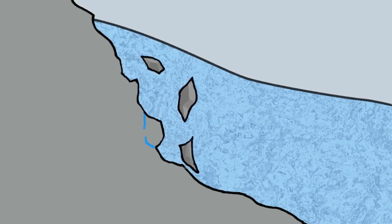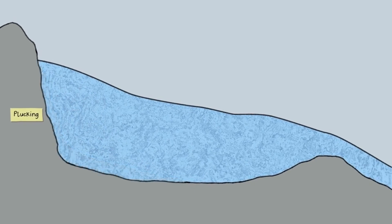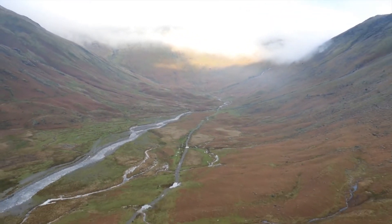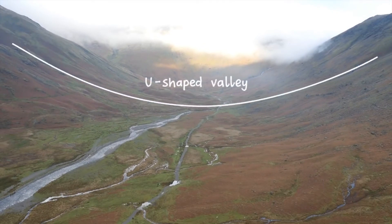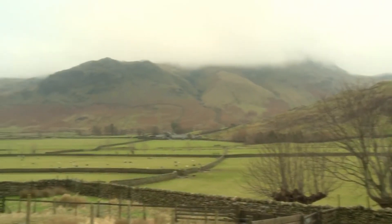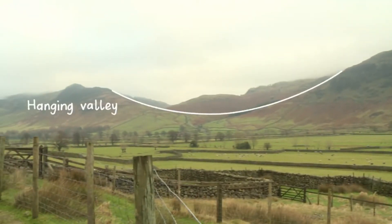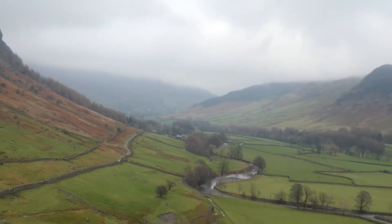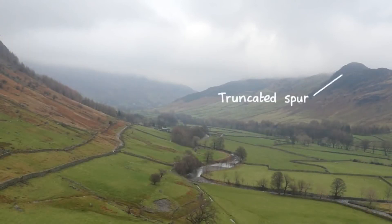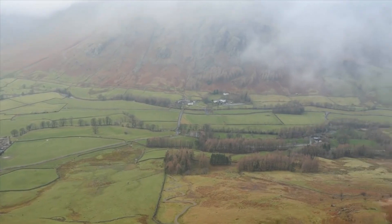Another process of erosion is plucking — the heavy glacier plucks off massive boulders of rock, contributing to the formation of a tarn. The glacier's erosion also forms a U-shaped valley as it moves from up the hill down the slope. A hanging valley is formed by a smaller glacier that was unable to erode as deeply. We also see interlocking spurs formed by the retreating glacier, and truncated spurs up in the hills.